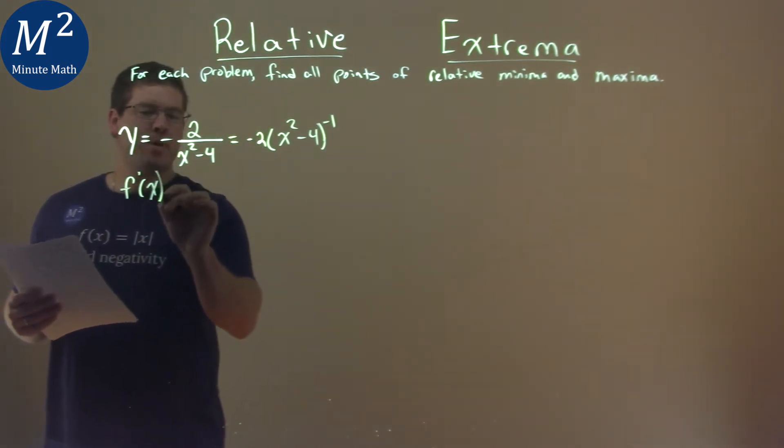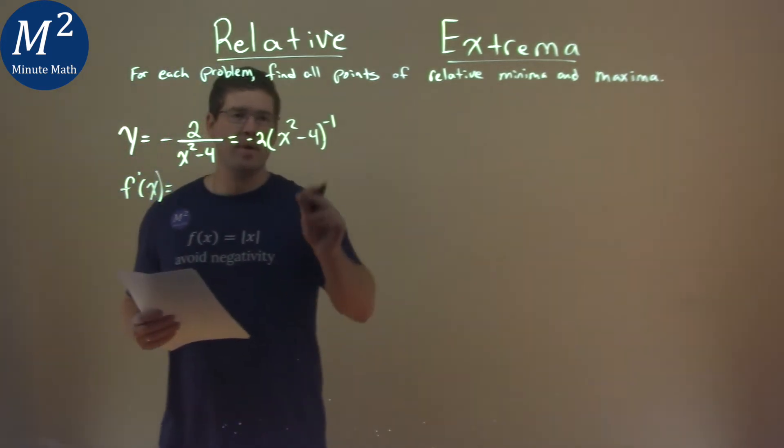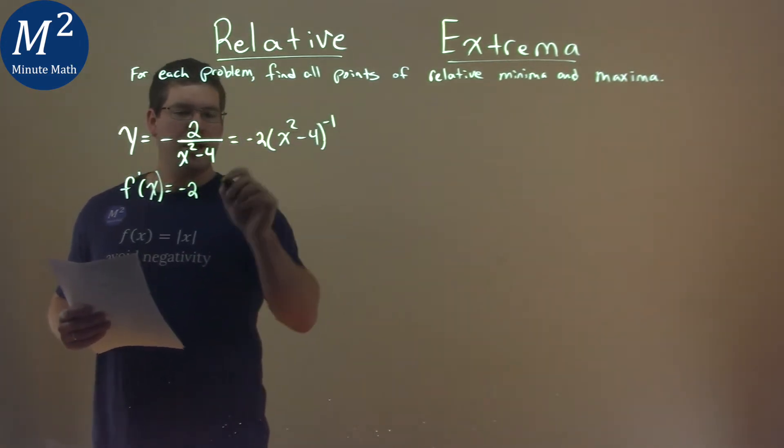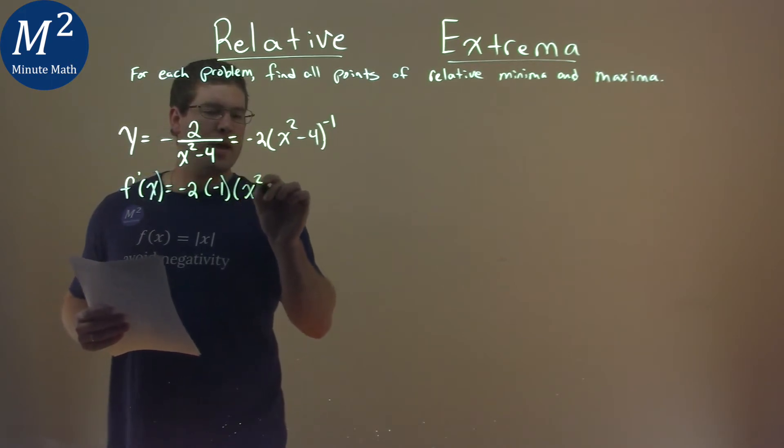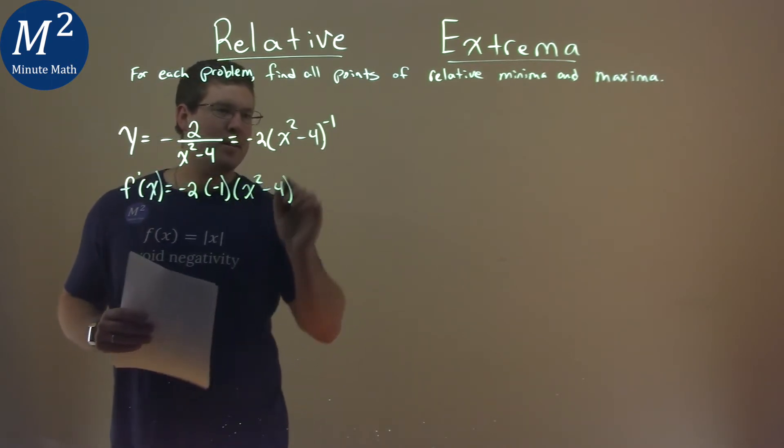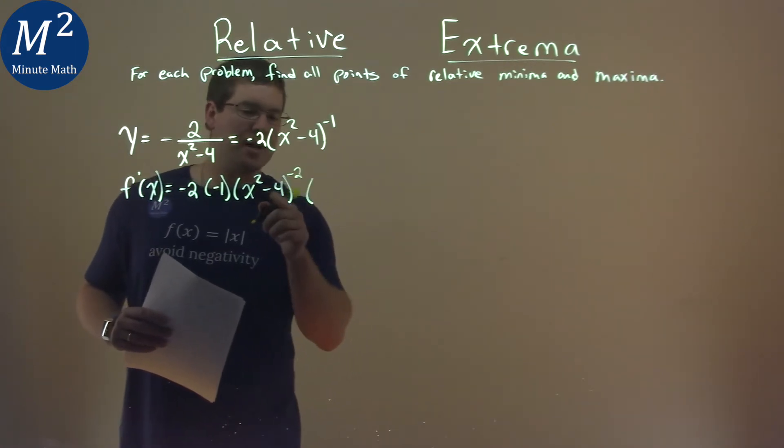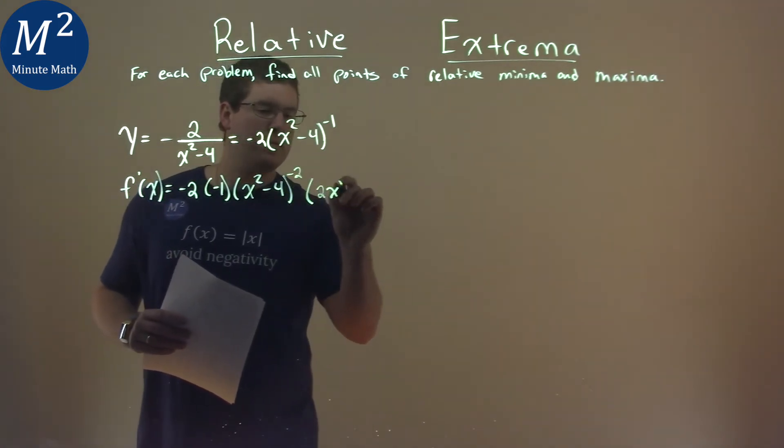You don't have to, but f prime of x we need to find anyway. Power rule, chain rule going on: negative 2 here is up front, negative 1 comes down, inside stays the same, x squared minus 4, subtract the exponent by 1 to negative 2 now, and then the inside derivative is just 2x.